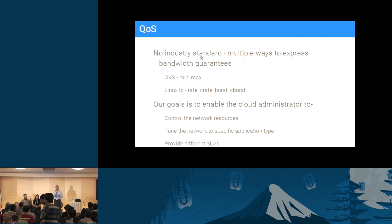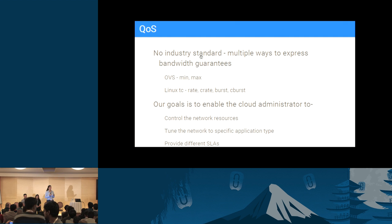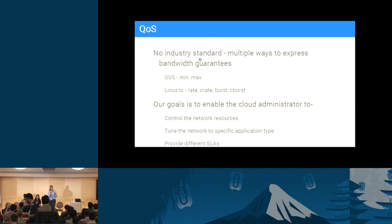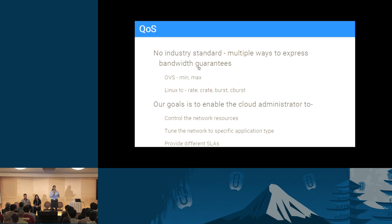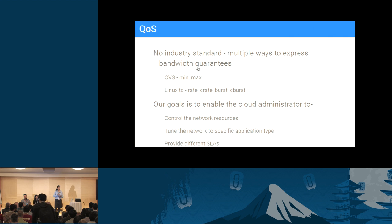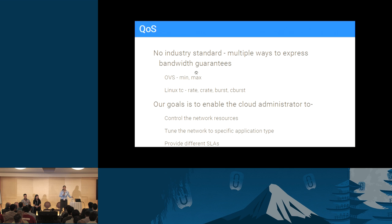We acknowledged the fact that there's a variety of ways to define quality of service. Even looking only at the Linux domain, you can look at traffic control and you have rate, ceiling rate, burst, ceiling burst, queues, classes — tons of stuff. Going to a higher layer of abstraction you have min, max, and burst — much better, but still no consensus, no standard. So we took a step back and looked at what problem we actually want to solve.